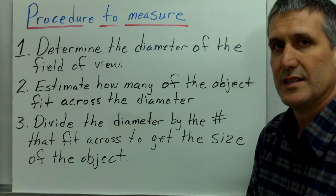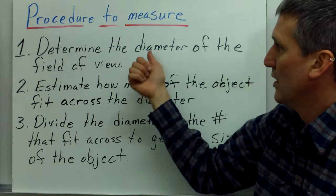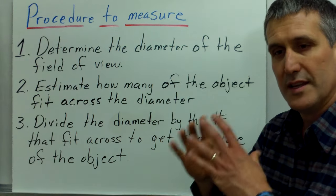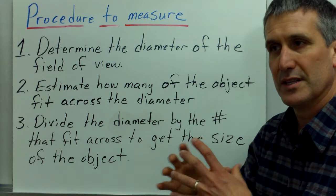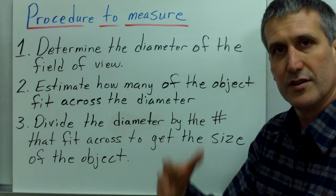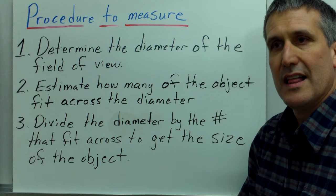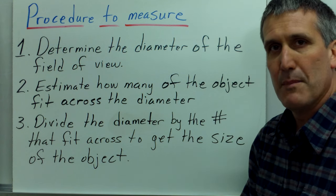So what is the basic procedure to measure under a microscope? The first thing is you got to know the diameter. You have to have a measuring stick, and once you know the diameter of the field of view under your different objectives, then you are able to make measurements.